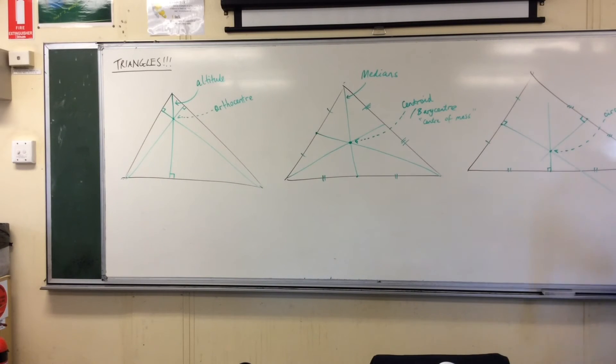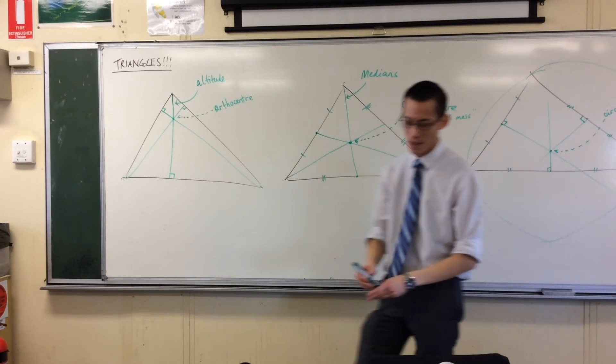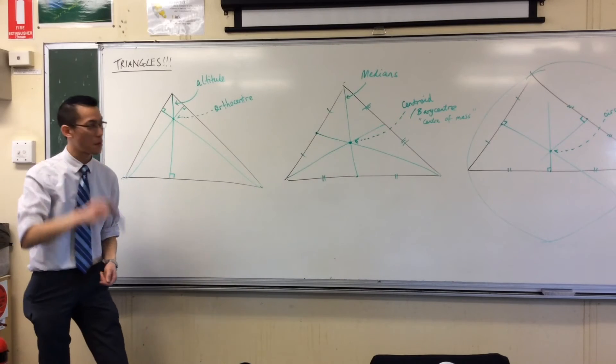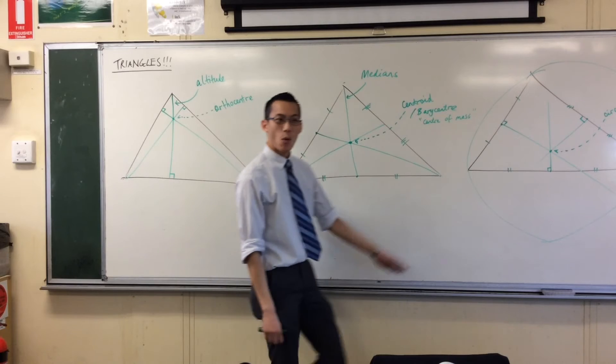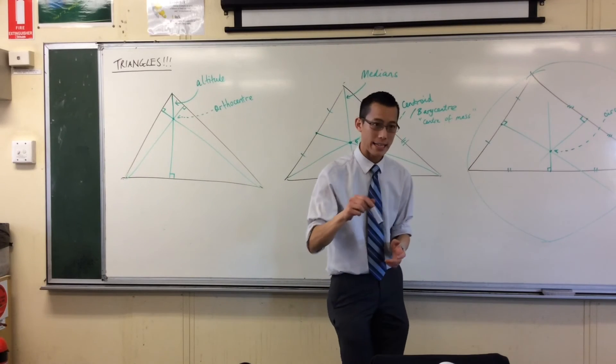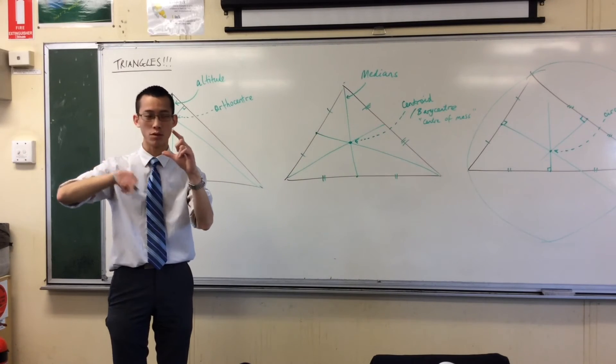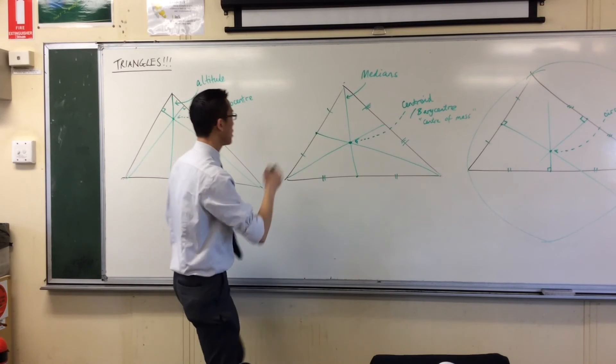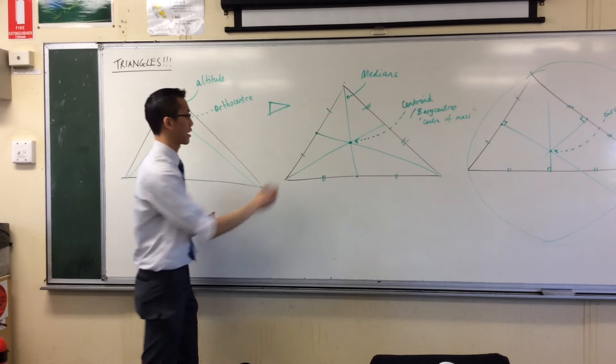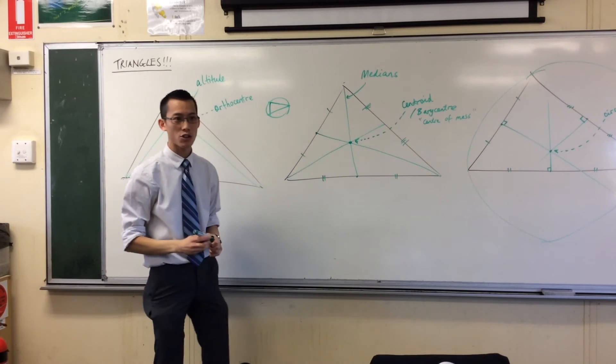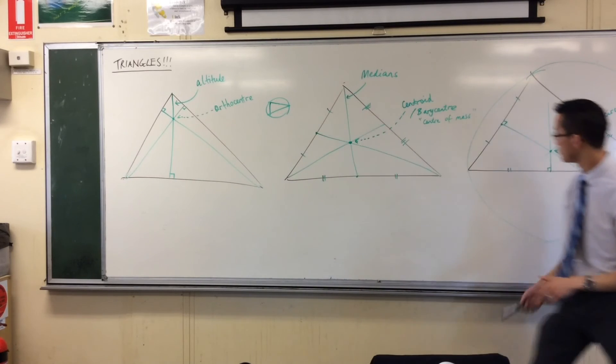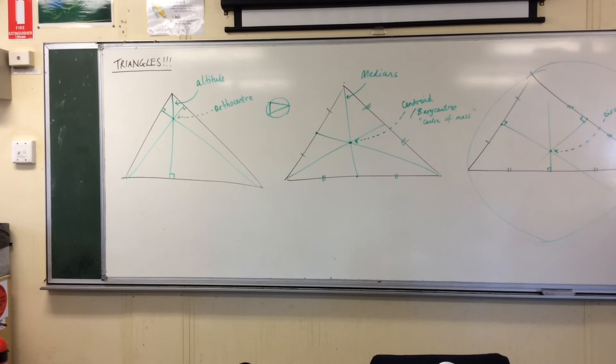We're going to go further into circle geometry and why it is that if you draw any triangle, any triangle at all, the three points of the triangle will define a unique circle. For any given triangle, there is only one circle that can pass through all three points. You can't draw a smaller one, you can't draw a bigger one, you have to draw that exact one. And this is the circle that goes through all of the three points.